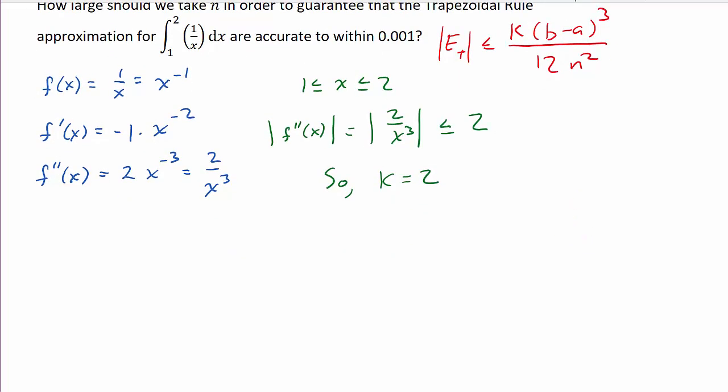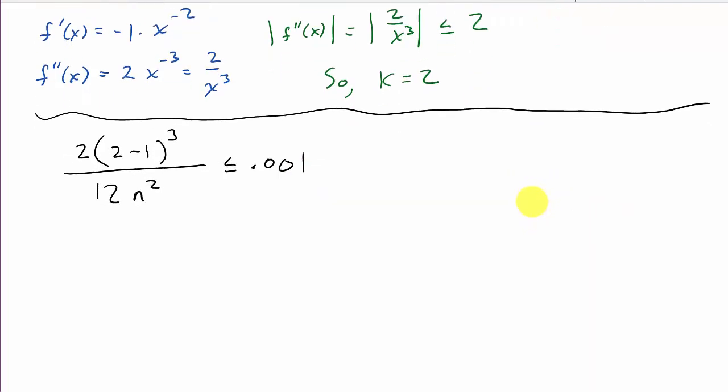All right. So, now, we can go ahead and work our problem. We can solve for n now. So, we know that this thing here, our error, so that's going to be k, which in this case is two times, and then we got b minus a, so two minus one, two minus one, and that's cubed over, and that's going to be 12n squared. All right? So, what does n have to be so that we're accurate to within 0.001? That's what we're looking for.